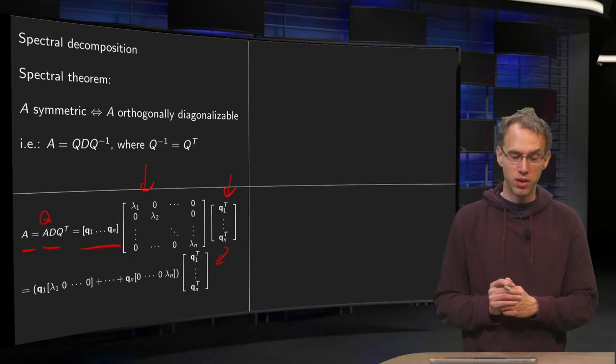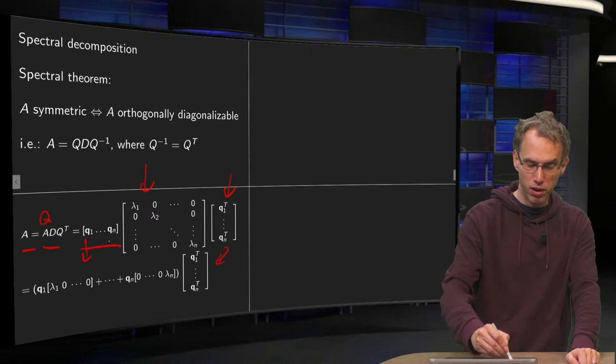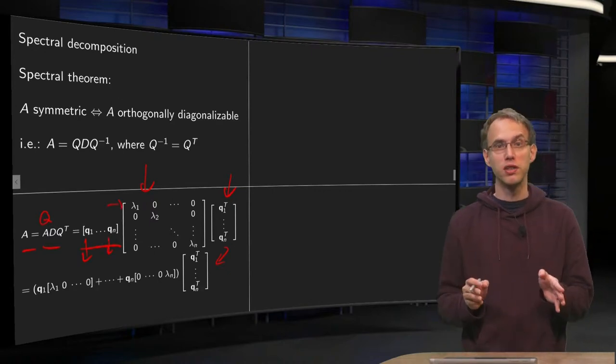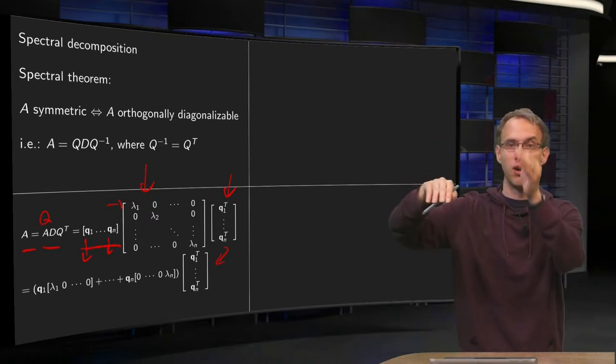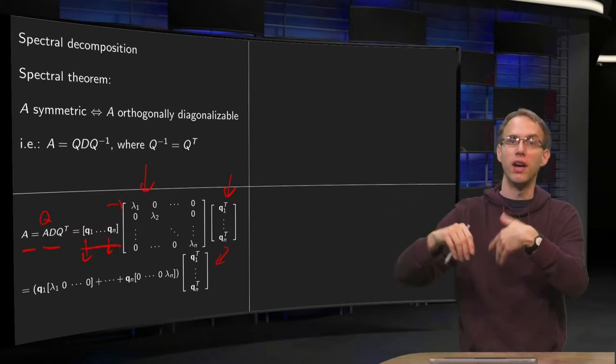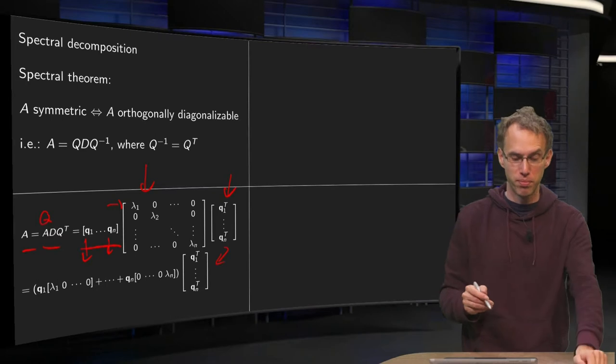For that we use the so-called column row rule. Here we have a bunch of columns and here we have a bunch of rows. So if you compute a matrix product you can do first column times first row plus second column times second row plus third column times third row and so on.